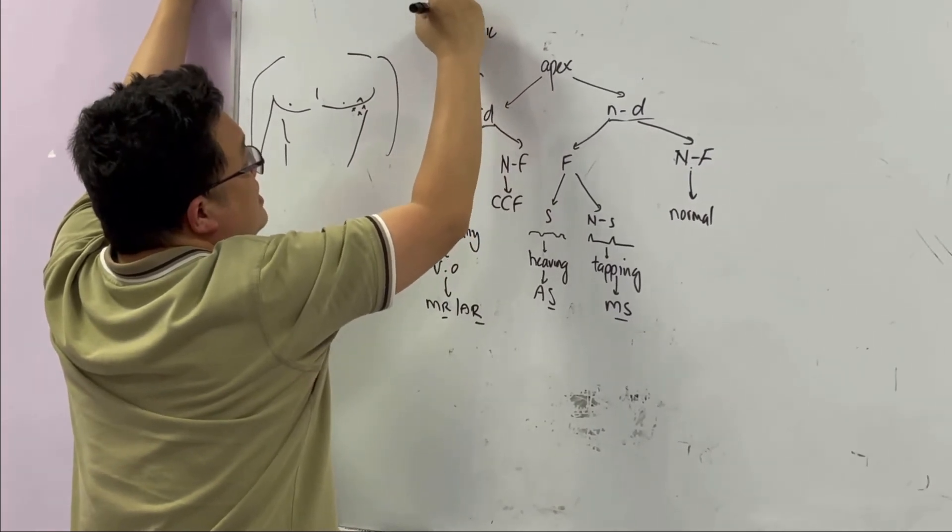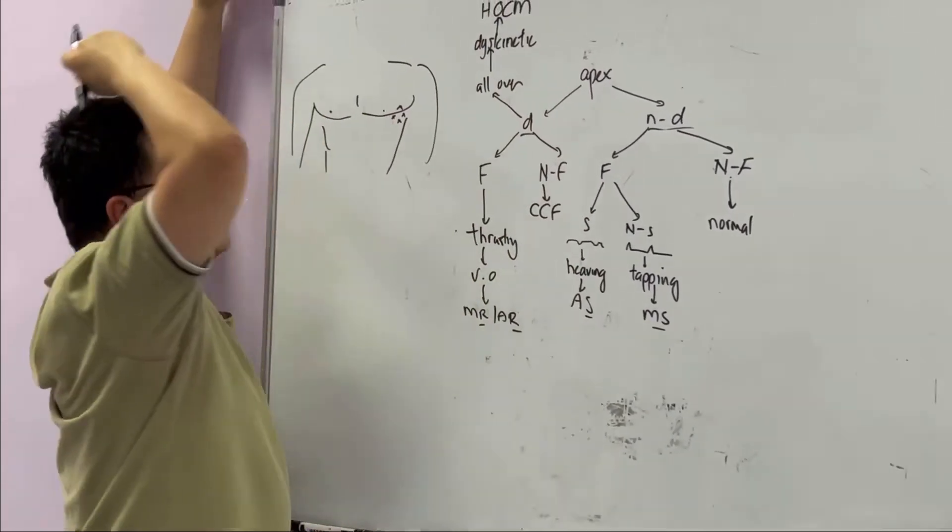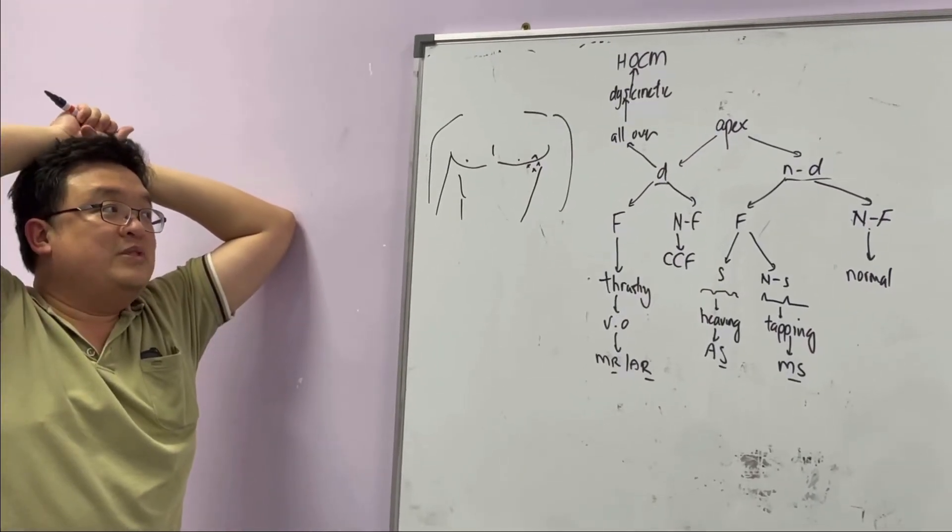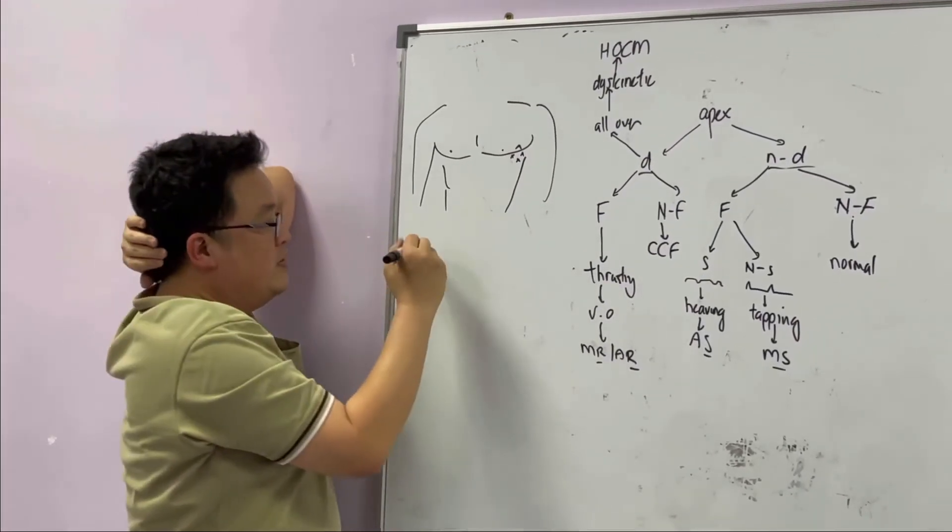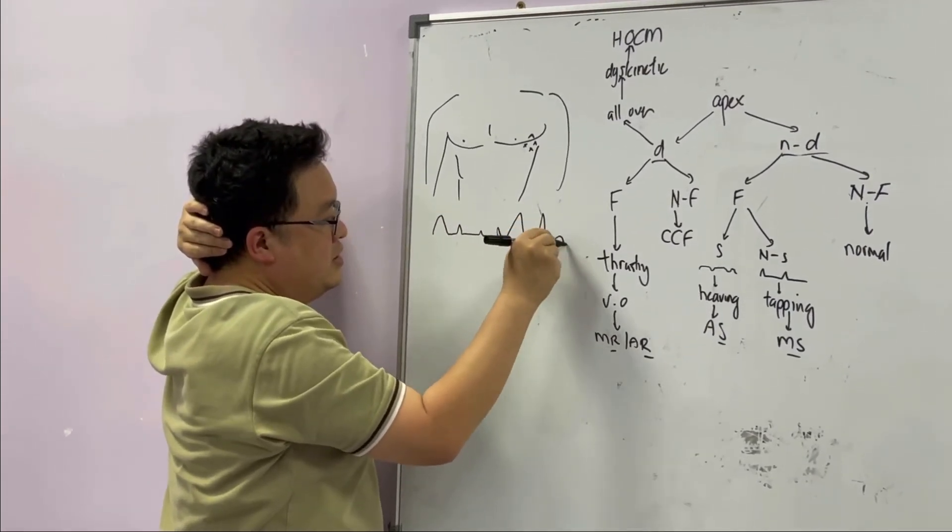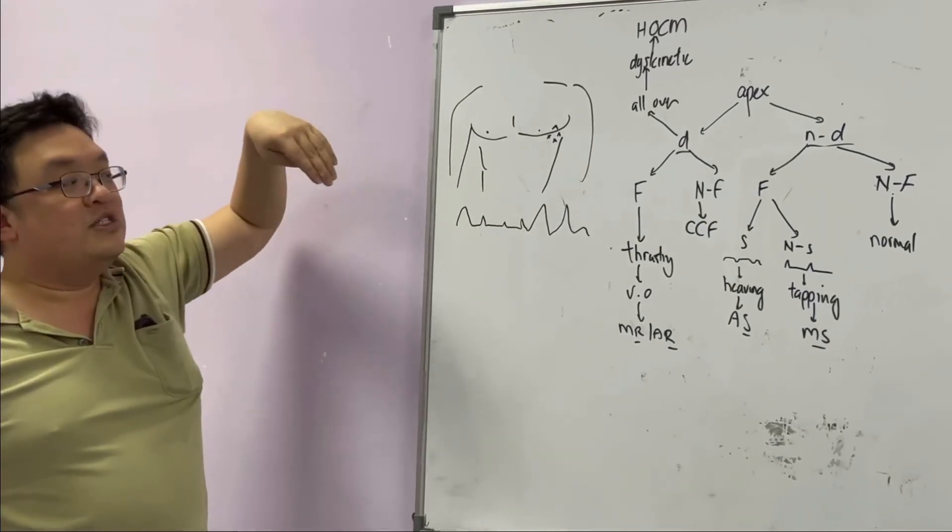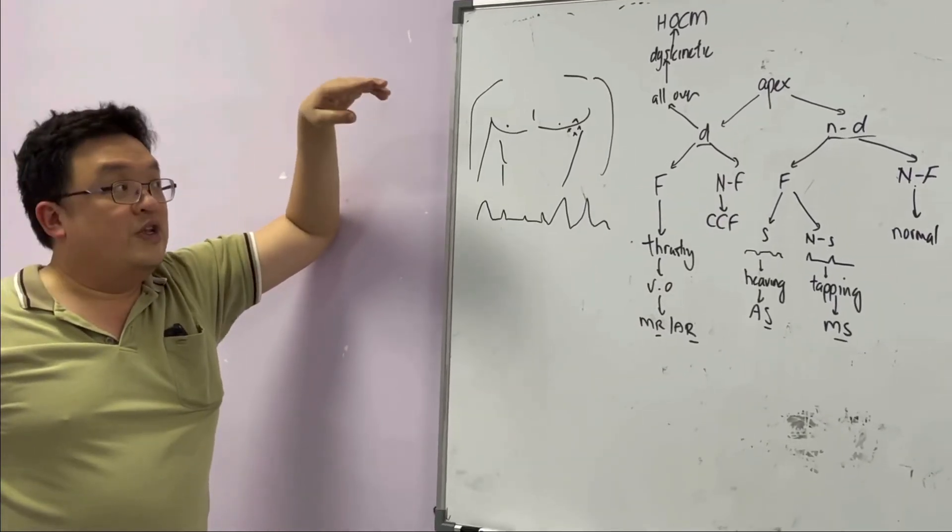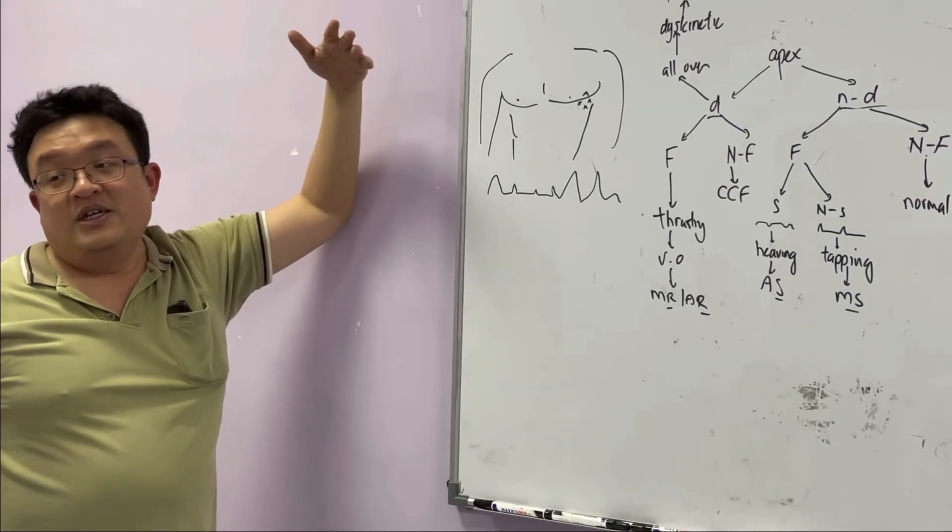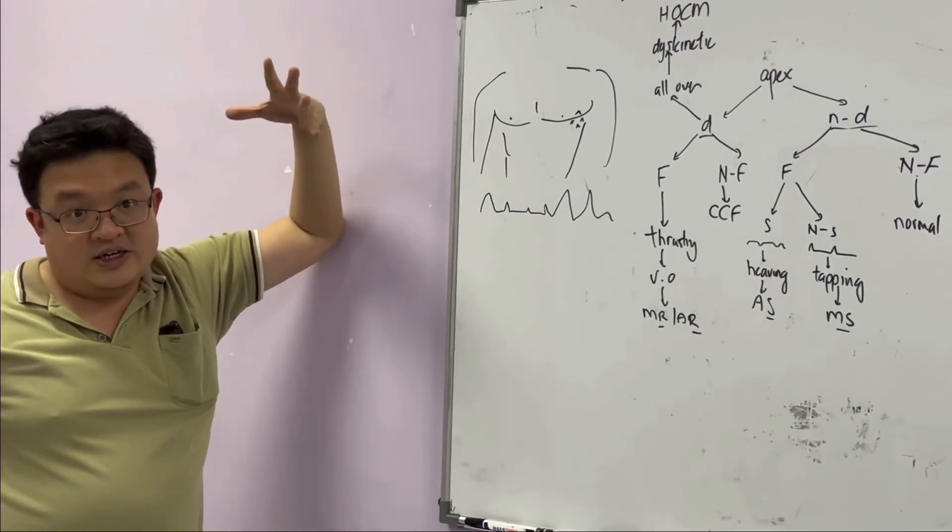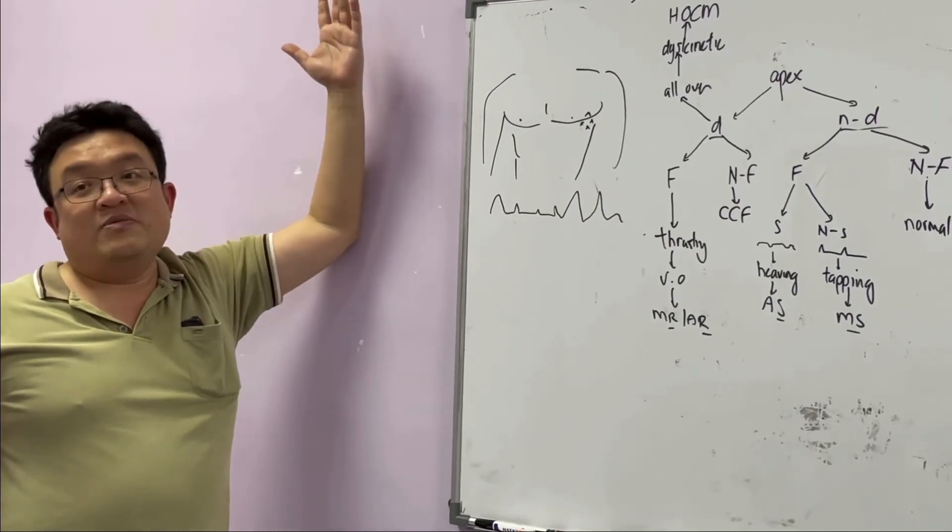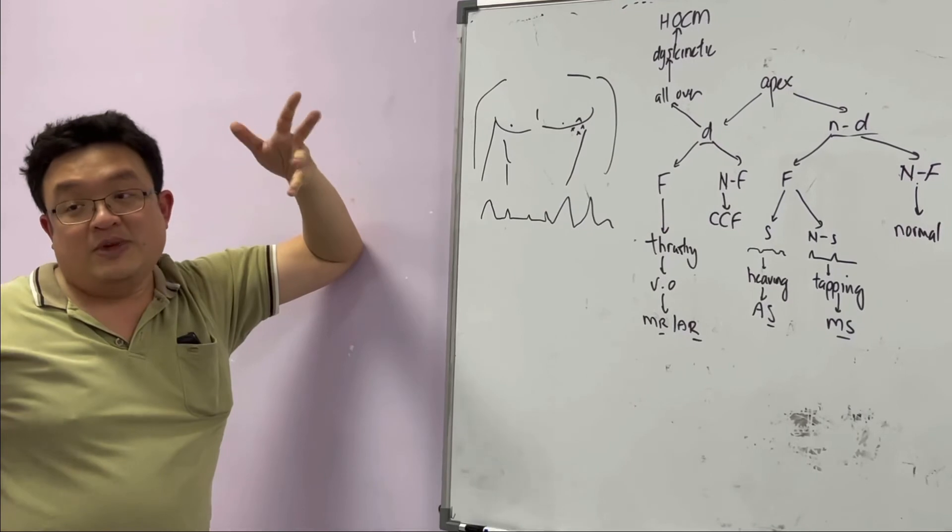Dyskinetic apex tells you this patient has a focal hypertrophic obstructive cardiomyopathy. Sometimes they have jerky pulse. What is a jerky pulse? That means big pulse, small pulse, small pulse, small pulse, big, big, small. It's because the obstruction of the hypertrophic obstructive cardiomyopathy is different beat to beat.